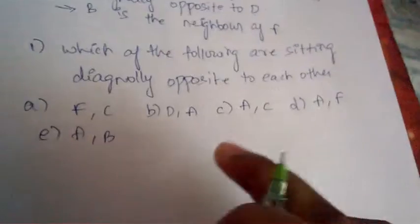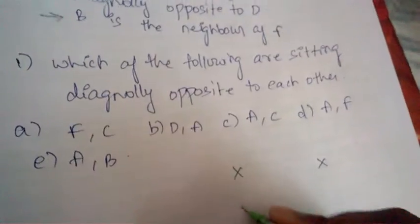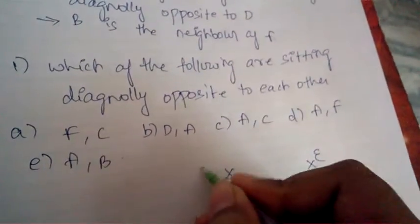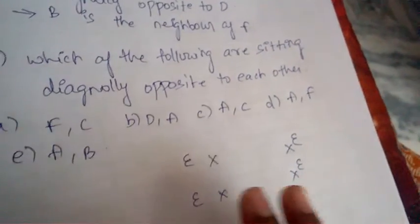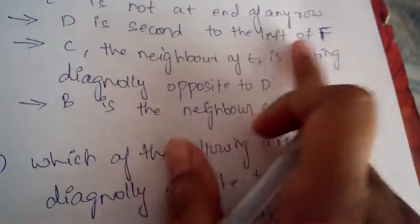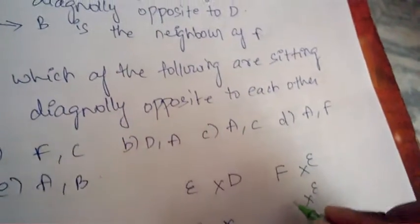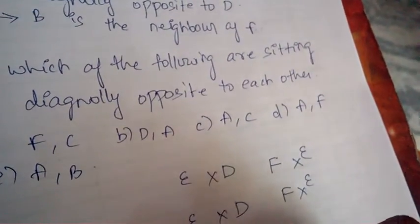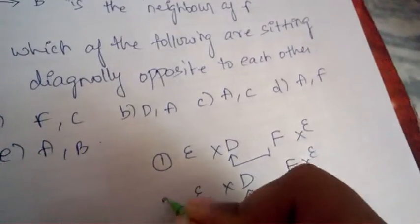Now let's analyze the answer. First, let's draw all four conditions. E is not at the end of the two rows, so E will never be at the end position. Next, D is second to the left of F — if this is F, then this will be D, in either the first or second row.